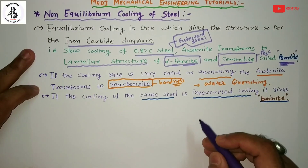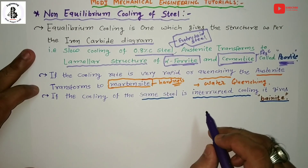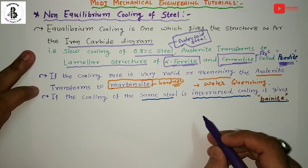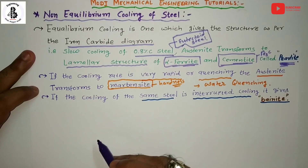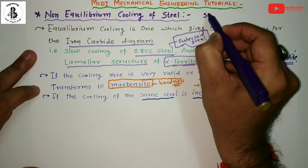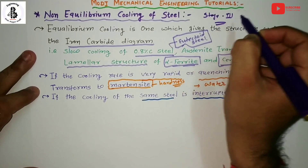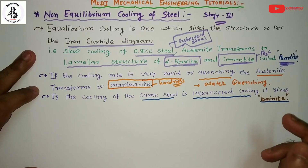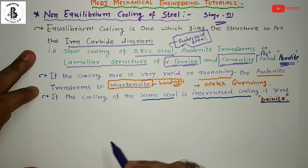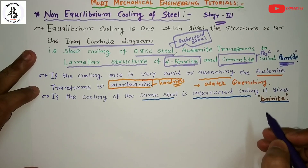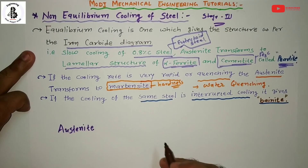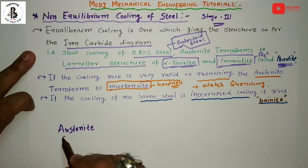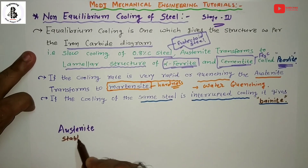For non-equilibrium cooling of steel, in the heat treatment process after heating, then soaking or holding, there is the cooling stage — the third stage — which converts steel into different forms. Austenite converts into different steel structures. Once you create a stable austenite phase by heating and holding at temperature, that is the stable form of austenite.